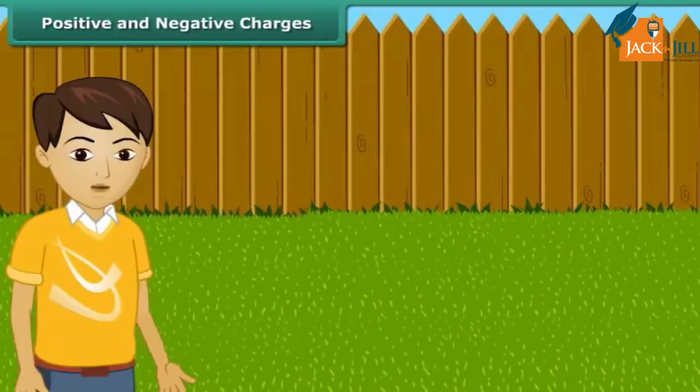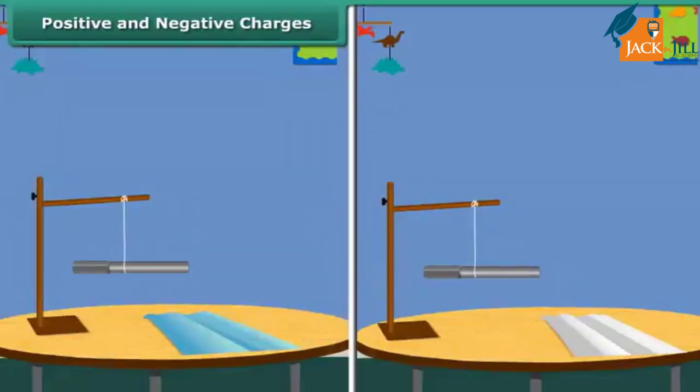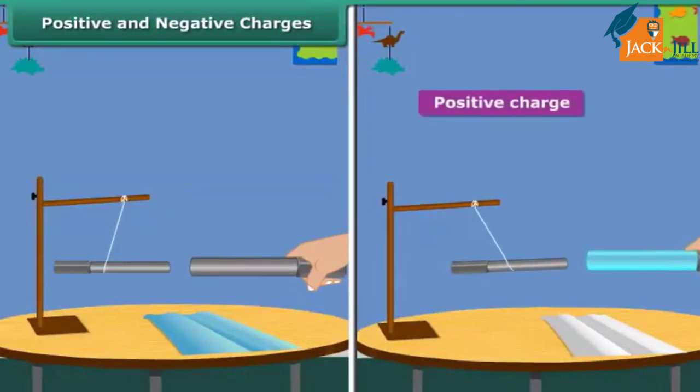These two kinds of charges are called positive and negative charges. The positive charge is shown by the plus sign and the negative by the minus sign.